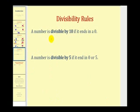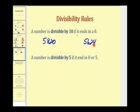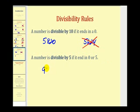A number is divisible by 10 if it ends in a 0. Comparing 5,820 and 5,624: 5,820 ends in a 0 and therefore is divisible by 10. The last rule: a number is divisible by 5 if it ends in a 0 or a 5. Looking at 9785 and 6276: 9785 is divisible by 5 because it ends in a 5, while 6276 is not divisible by 5 because it does not end in a 0 or a 5.